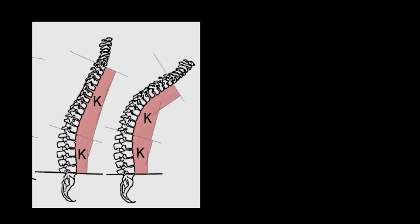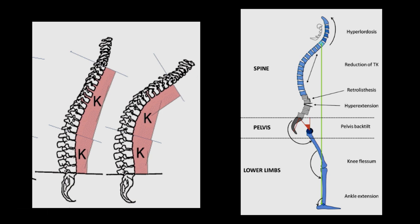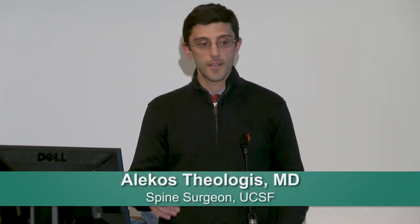Over time this kyphosis — this forward bending posture — can continue to get worse. As you lean more forward you start to look at the ground. There are compensatory mechanisms: to continue looking straight, you have to bend your neck up, flex your knees, extend your hips, and bend your ankles. It's a full global compensation for a very localized pathology, and trying to walk like that all day is very debilitating. By the end of the day most people cannot continue to stand upright.